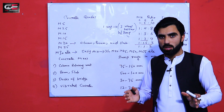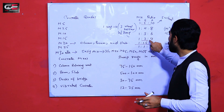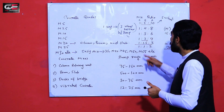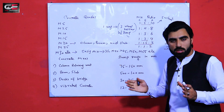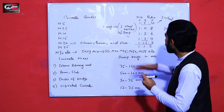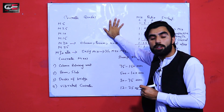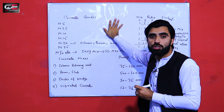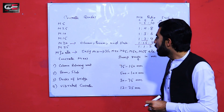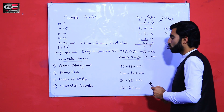You should do batching by volume or by weight using a balance. Or you can make a box: one box cement, two boxes sand, and four boxes aggregate for M15; or one box cement, 1.5 boxes sand, and three boxes aggregate for M20. Using the wheelbarrow method for building construction is wrong — you will not get full strength and you will waste your money.